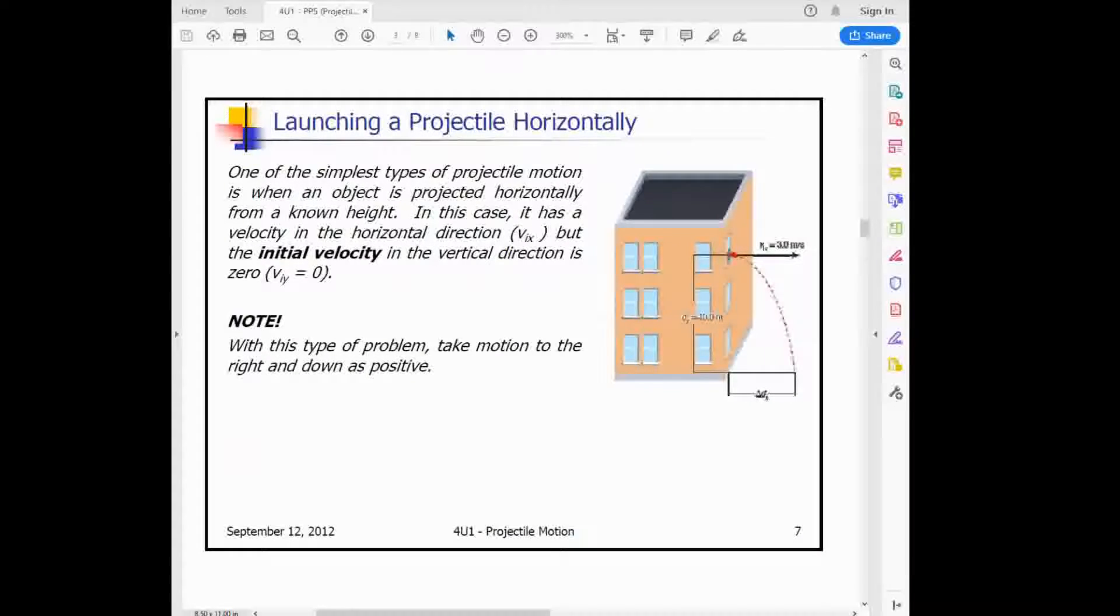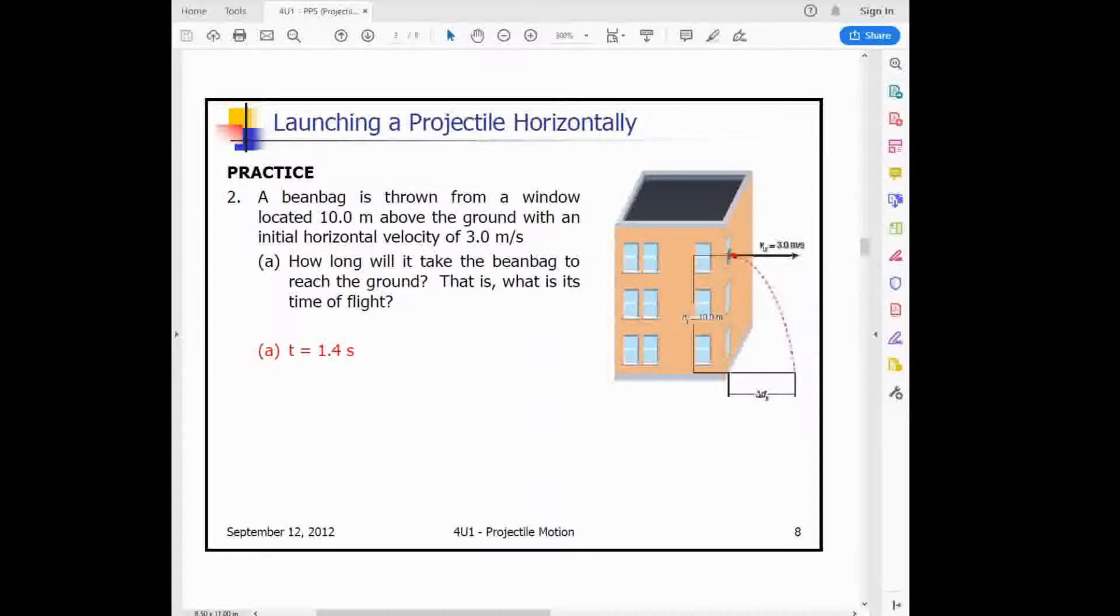There are three types of projectile motion problems. The simplest one is when something has an initial horizontal velocity vector and begins to fall. You can think of this as throwing something out of a window problem. In this case, we have vix, the initial horizontal velocity, and viy is 0. It starts accelerating from 0 and then accelerates to a non-zero velocity. It's also very good to use down as positive and right as positive for a problem like this.